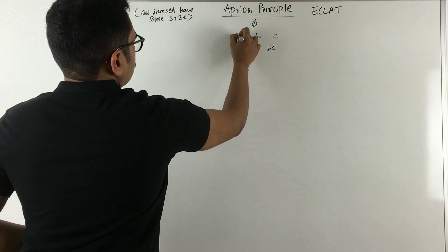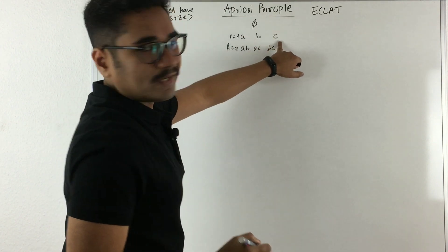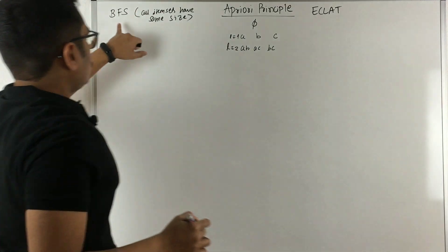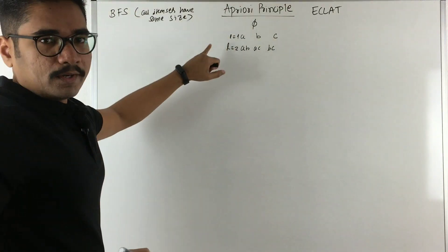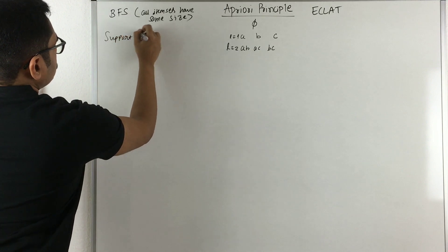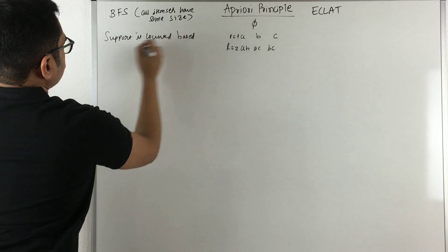So at level one, that is L equals one, you have all the one-item sets. At level two, you have two-item sets. So that's what BFS for A Priori is.